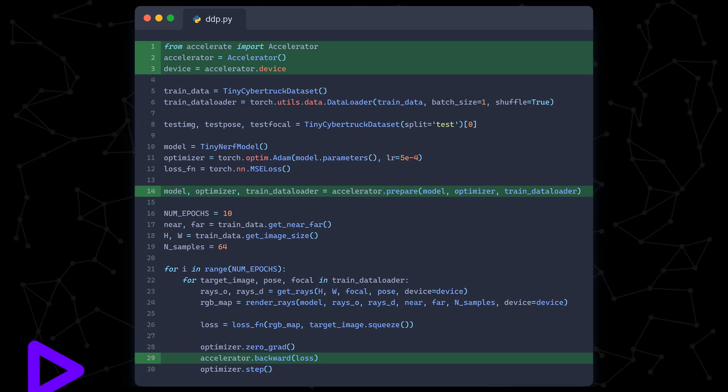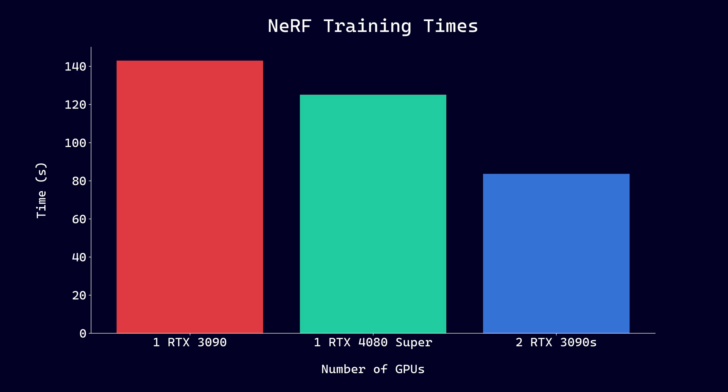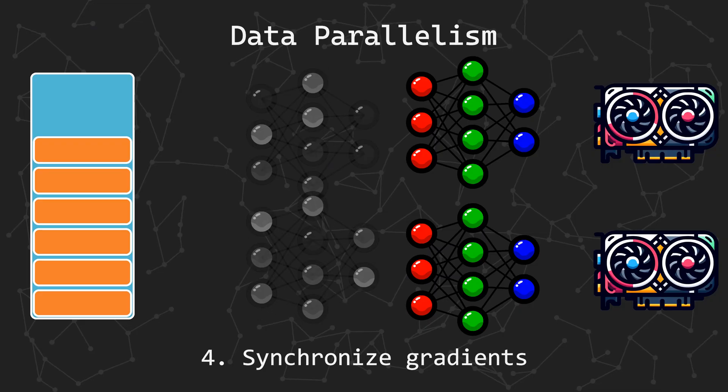After we start training with the Accelerate CLI, NVIDIA SMI shows us both GPUs are cooking. Comparing the training times between one RTX 3090, my RTX 4080 Super, and both RTX 3090s, we see massive speedups with DDP. It's about a 40% speedup, which isn't exactly the 50% you might expect, but this was with minimal optimizations. The main additional overhead with DDP is the minimal synchronization cost before stepping the optimizers, along with sharding the dataset. I hope I've convinced you that DDP is pretty cool, so why not just stop here?